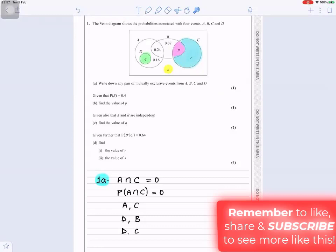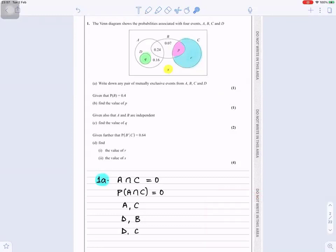So mutually exclusive events when A intersection C is equal to zero, or probability of A intersection C equals to zero. There is nothing between A and C. They don't intersect at all. So A is on the side. That's A there and that's C. So A and C is one pair.